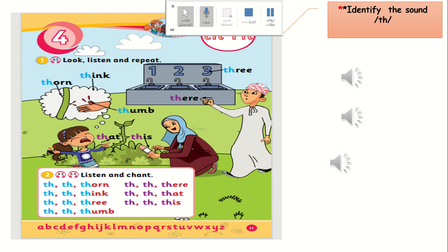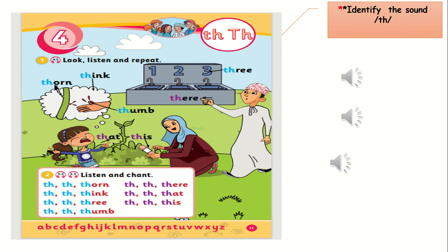Thorn. Think. Three. Thumb. There. That. This. So here we have this sound: 'the' — there, this, that. And here we have 'th' — thorn, think, thumb, three.